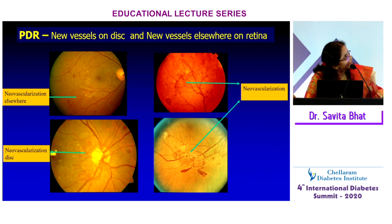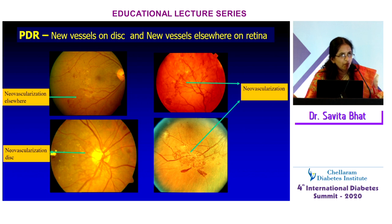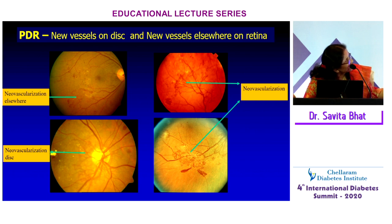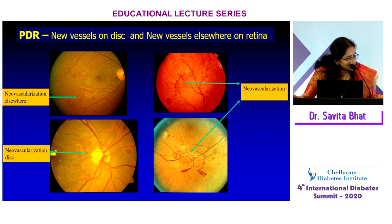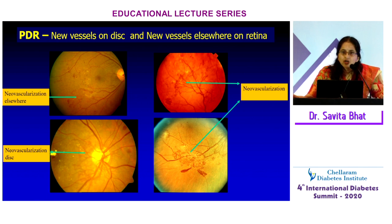In proliferative diabetic retinopathy, a frond-like new blood vessel is the hallmark finding. It has a high-risk component that threatens vision and a non-high-risk component — such as neovascularisation elsewhere, occurring at the edge of non-perfused retina. If there is neovascularisation at the disc, it means a large part of the retina has ischemia and requires urgent referral to an ophthalmologist.